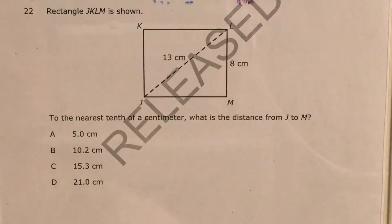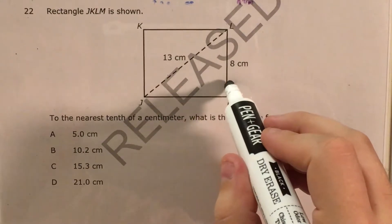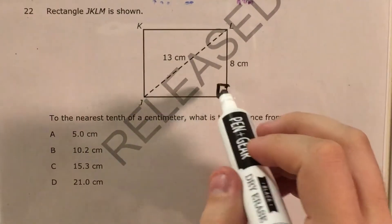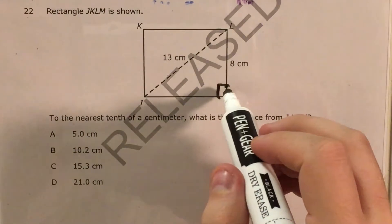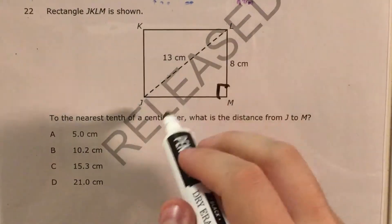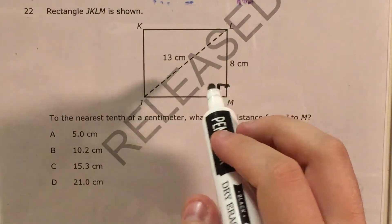Now first, how do we know that this is a right triangle? Well, if we see that this whole shape is a rectangle, then I will remind myself that each of the angles on a rectangle is a right angle, which means that this one's a right angle, which means that this corner, these two sides in this diagonal are going to form a right triangle.